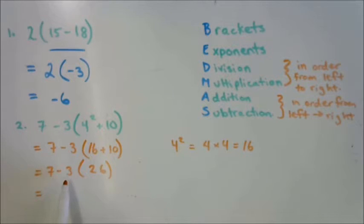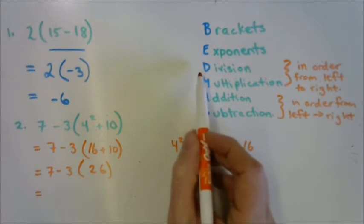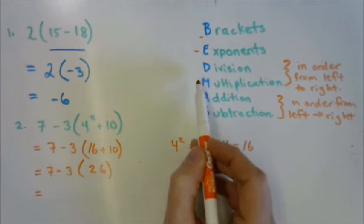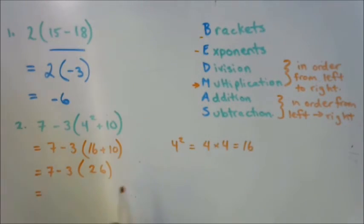Now we have subtraction and multiplication left. We're down here. Yep, we've taken care of our brackets. Exponent. And now we're doing multiplication. So we've got 7 minus 3 times 26. 78.